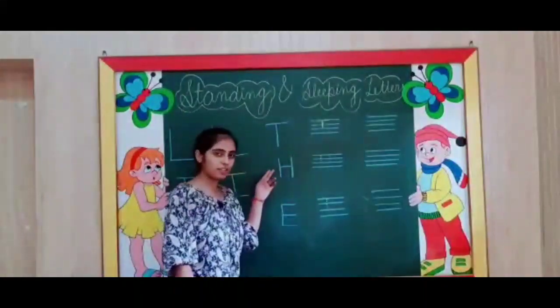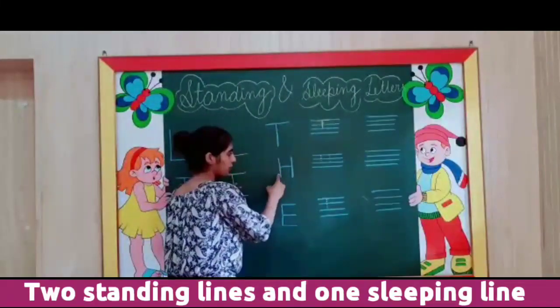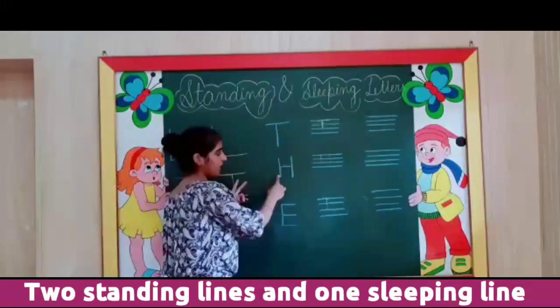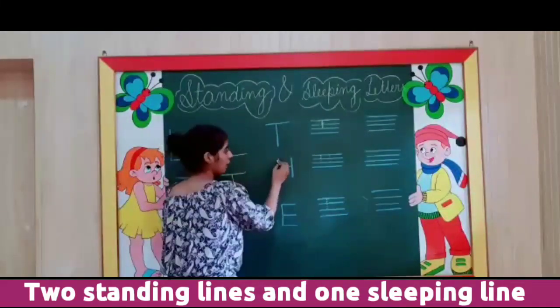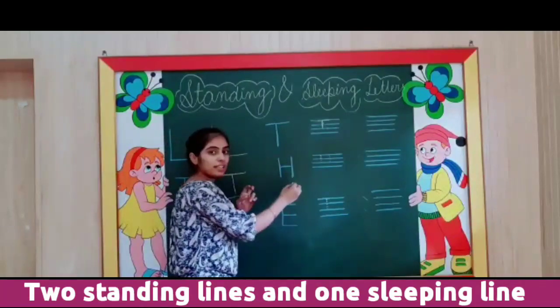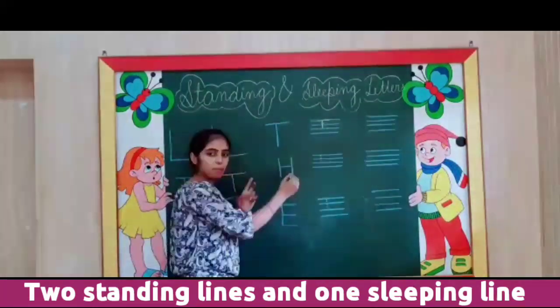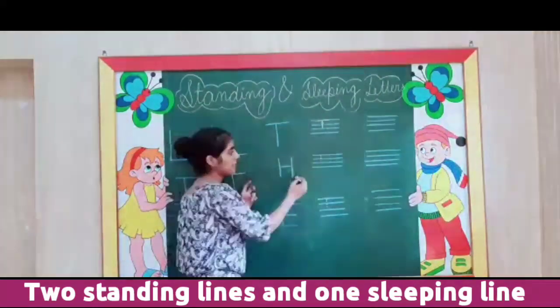Next letter we have is H with two standing lines — first this and second this — and one sleeping line.